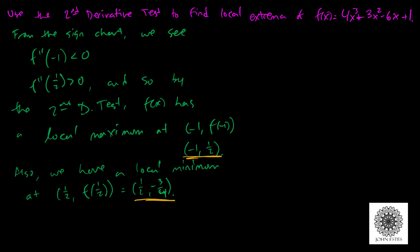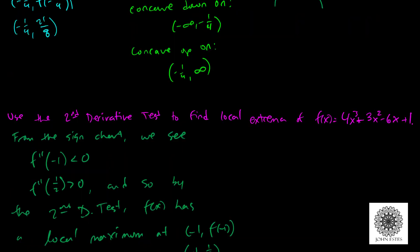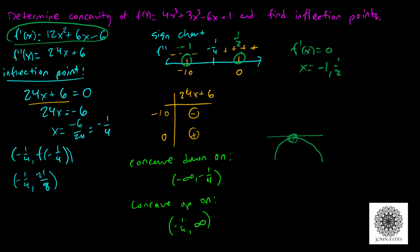they have horizontal tangent lines. At the point -1, I'm at a point where I'm concave down, so something like this. And at 1/2, I'm concave up, something like that. So the only way that's possible is if at -1 I have a max and at 1/2 I have a min.